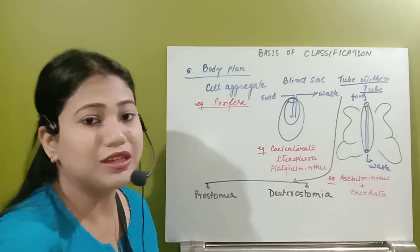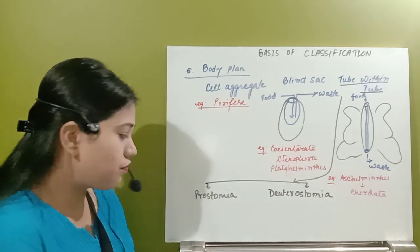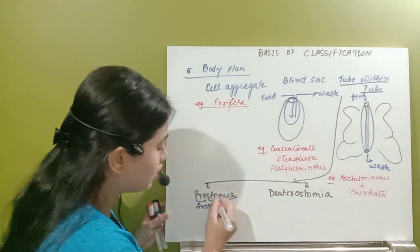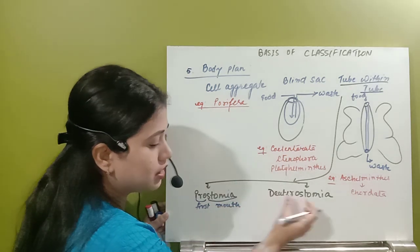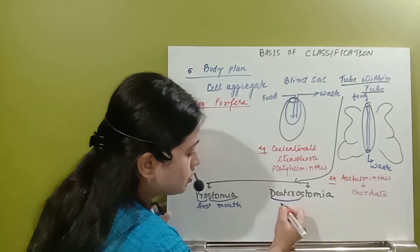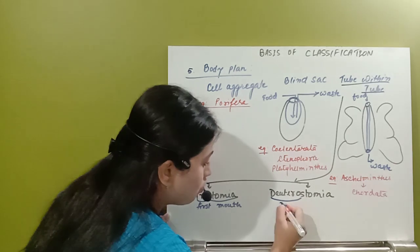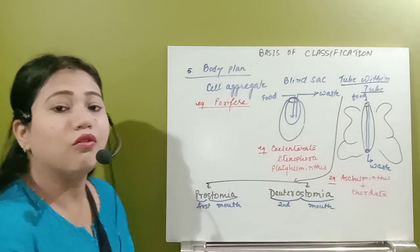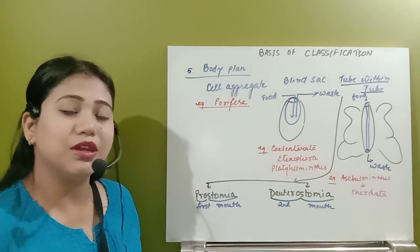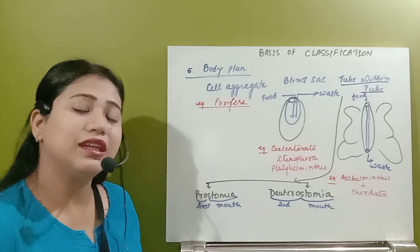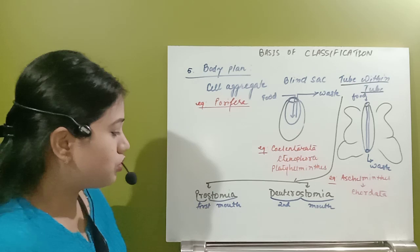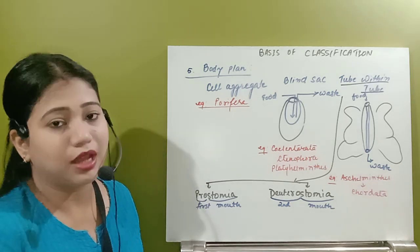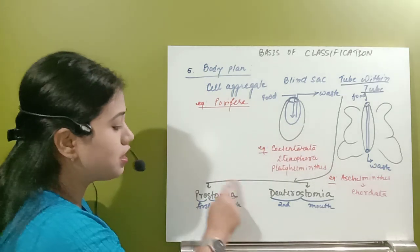What is protostomia and deuterostomia? Let's just break the word. Pro means first, and stomia - stom means mouth. And here in deuterostomia, deutero means second, and stom means mouth. Whenever this organism is in the embryonic state, the alimentary canal develops first the mouth and then the same alimentary canal will develop the anus. That type of body plan where the embryonic alimentary canal forms first the mouth and after that the anus is known as protostomia.